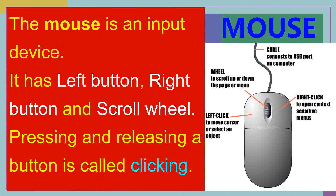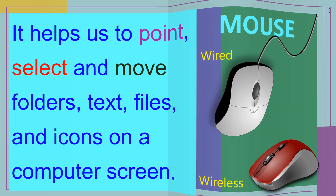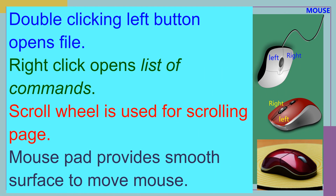The mouse has a left button, right button, and scroll wheel. Pressing and releasing a button is called clicking. The mouse helps us to point, select, and move folders, files, and icons on a computer screen. Double-clicking the left button opens a file. Right-click opens a list of commands. The scroll wheel is used for scrolling the page.